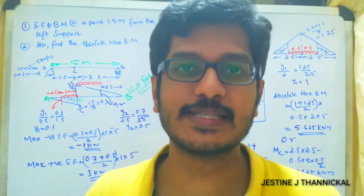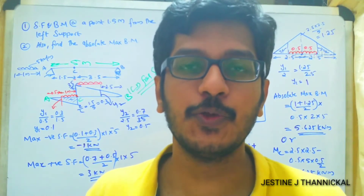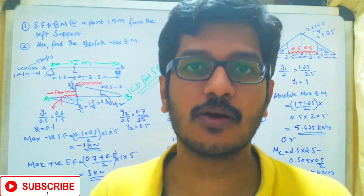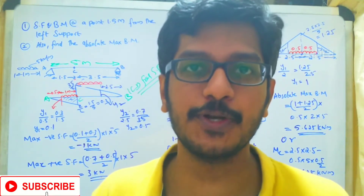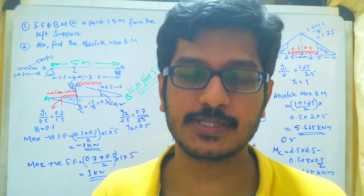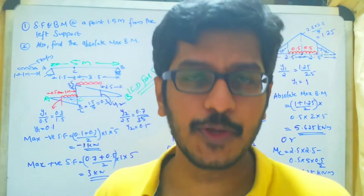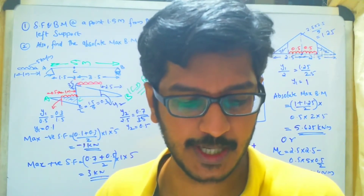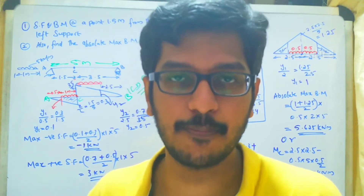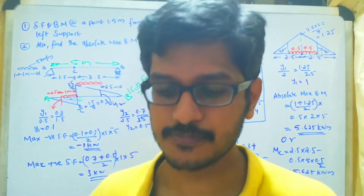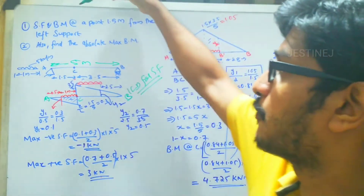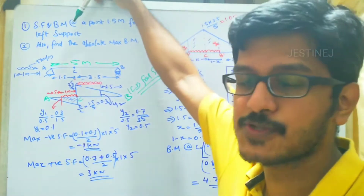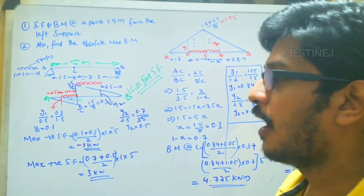Welcome to a new video lecture. Today we will discuss a problem related with a UDL of smaller span traveling through a beam. The previous video lecture already discussed the concept behind this, so please go and watch the previous video lecture. The question: a UDL of length 1 meter and intensity 5 kilo Newton per meter is crossing a simply supported beam of span 5 meter. Find the shear force and bending moment at a point 1.5 meter from the left support.